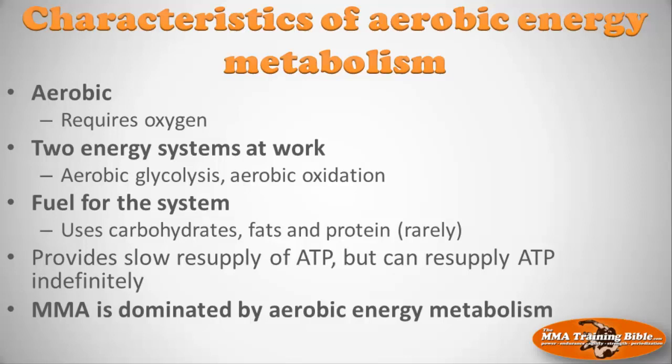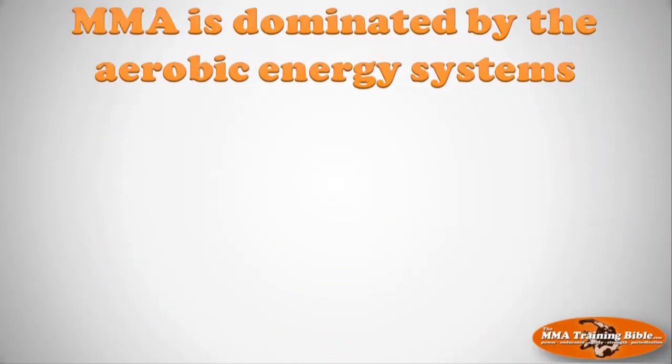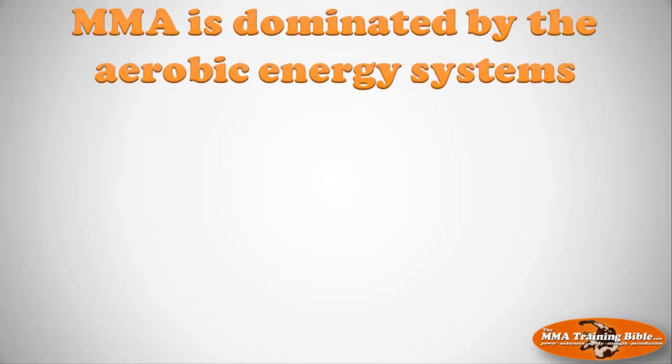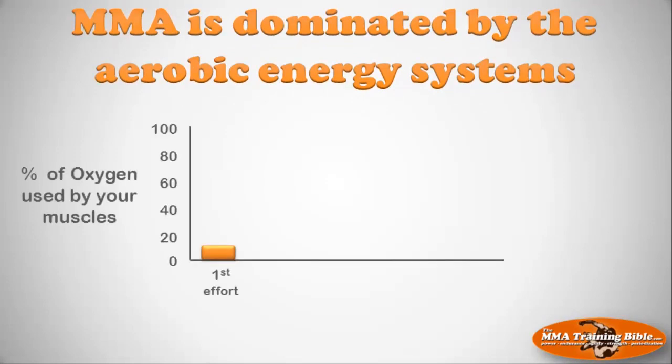What are the key characteristics of aerobic energy metabolism? Number one, as implied in the name, it's aerobic — it requires oxygen to generate ATP. There are really two energy systems we focus on here: aerobic glycolysis and aerobic oxidation. The fuels for this system are primarily carbohydrates and fats, and protein to a lesser extent — you don't really want to be breaking down protein to power this system. The aerobic energy systems don't produce ATP as fast as the anaerobic systems, but they can resupply ATP indefinitely. Most importantly: MMA is dominated by aerobic energy metabolism.